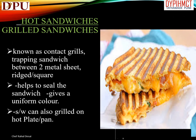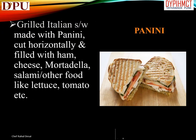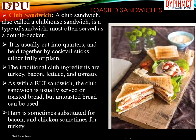Hot and grilled sandwiches: known as contact grills, trapping a sandwich between two rigid metal sheets helps to seal the sandwich and gives a uniform color. Sandwiches can also be grilled on a hot plate or pan. Panini sandwich is a grilled Italian sandwich made with panini bread cut horizontally and filled with ham, cheese, mortadella, salami, and other items like lettuce and tomato.